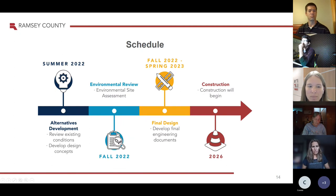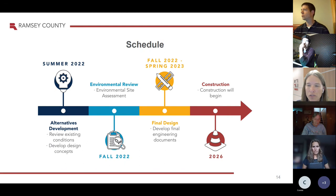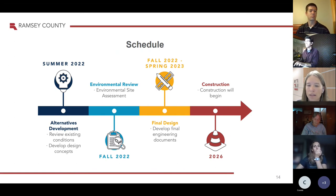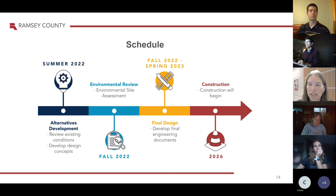For the schedule, we're working through some of the design alternatives right now and have laid out some of the engineering constraints, which Cassie will go through shortly. This fall we'll be doing an environmental site assessment and moving into preliminary design. As we move into 2023, we'll be finishing our design, and then construction right now is planned for 2026. Depending on how the scope plays out, some of those elements could be moved to an earlier date, but right now everything is planned for 2026.